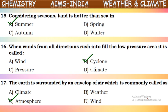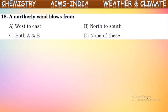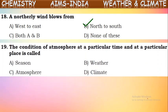Next question: the northerly wind blows from the northern side of India, that is from the Himalaya side. In that time we get winter season. The atmospheric condition at a particular time and at a particular place is called weather. Weather can change from time to time, but if you take the average readings over a long time, those conditions are called climate.